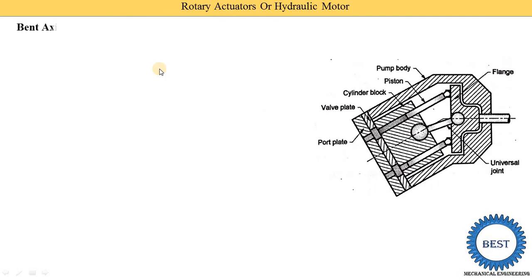The second type is the bent axis piston motor. It is named the bent axis piston motor because the cylinder block axis and the shaft axis are different — they are at certain angles to each other.